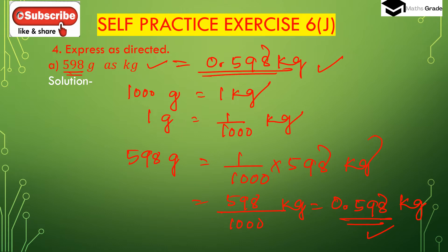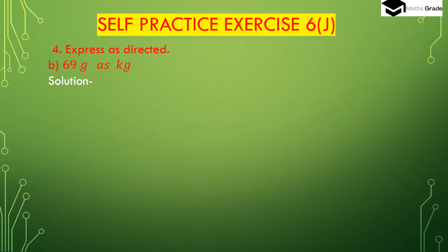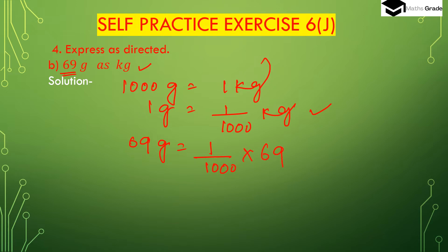Now question b: 69 grams to kg. We have to convert 69 grams to kg. We know 1000 grams is 1 kg, so 1 gram will be 1 divided by 1000 of kg. So 69 grams will be 69 multiplied by 1 divided by 1000, which gives 69 divided by 1000 kg.